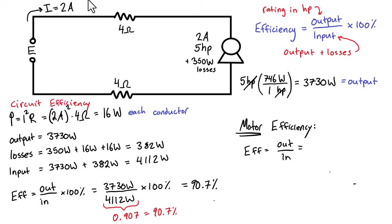So for the motor itself, it's putting out 3730 watts. But for the input to the motor, what's going into the motor is the output of the motor plus the losses of the motor. So it's going to be over 3730 watts plus that 350 watts. You can't consider those 16 watts that are getting lost in each conductor to be going into the motor because they're not going in, they're getting lost in the rest of the circuit.